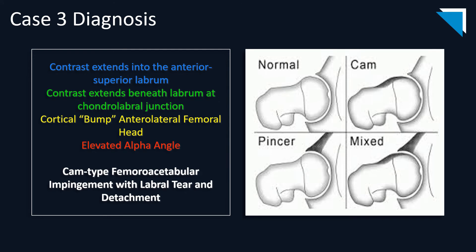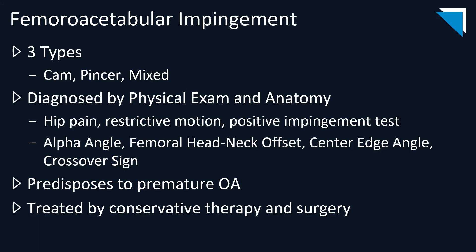This is CAM-type femoroacetabular impingement with a labral tear and detachment. There are three types of femoroacetabular impingement: CAM type, which involves the femoral head-neck junction; pincer type, which involves acetabular overhanging; and mixed type, which is very common. This is diagnosed by physical exam and anatomy. Patients present with hip pain, restrictive motion, and a positive impingement test. Measurements include the alpha angle, femoral head-neck offset, center edge angle, and the crossover sign.